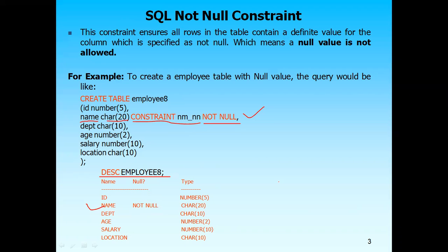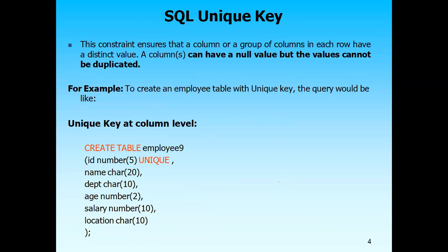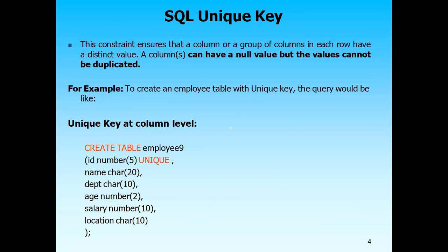I hope you are clear with this. Next is the unique key constraint. Unique key is like your primary key, but the main difference between primary key and unique key is that a unique key can be null. In one table there can be multiple unique key fields, but only one primary key. The primary key is defined for the unique identification of the record and must never be null.